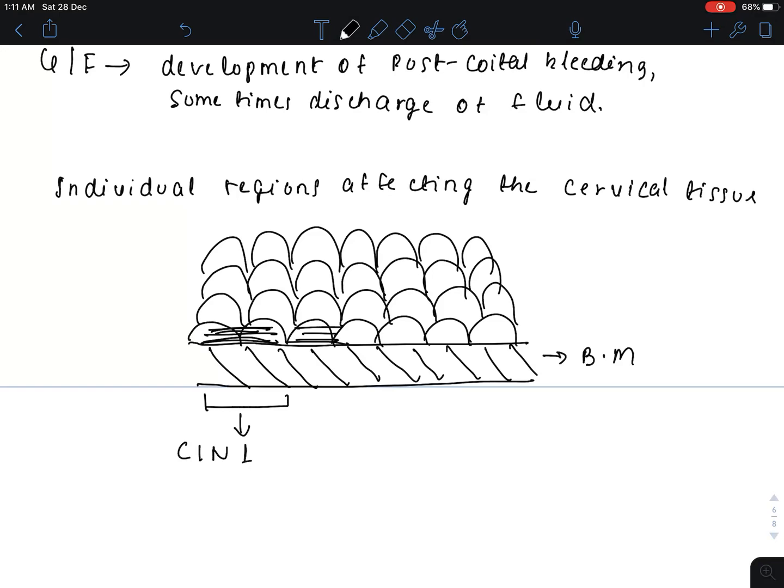If more than one-third of the layer is involved, this is CIN2. If more than two-thirds is involved but not complete thickness, this is CIN3.